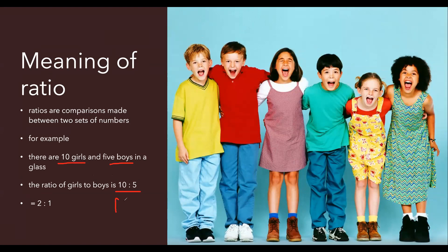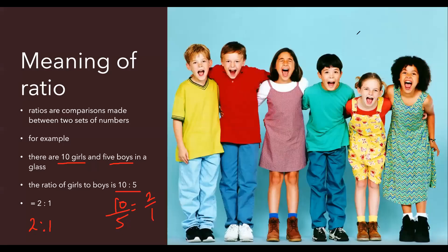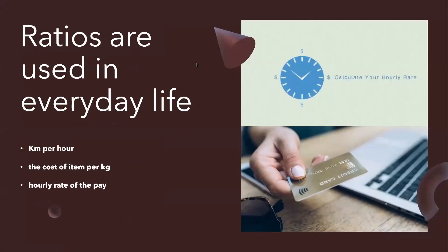It is written as 10 by 5 and then it gets reduced, 5 twos are 10, 5 ones are 5. So this is the ratio 2:1. Ratio is actually the simplest whole number comparison which we can make between the numbers or the given quantities. I hope this is clear with you.